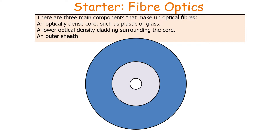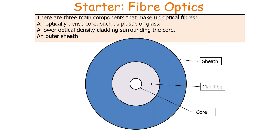There are three main components that make up optical fibres: an optically dense core made of a material such as plastic or glass, a lower optical density cladding surrounding the core, and an outer sheath. On the diagram, the sheath is around the outside, the cladding is in the middle, and the core is in the dead centre.